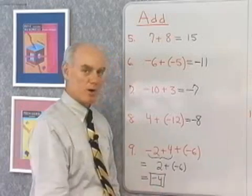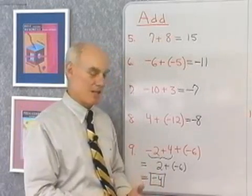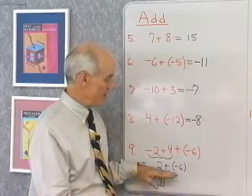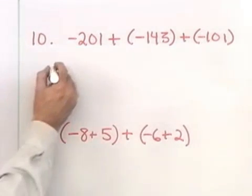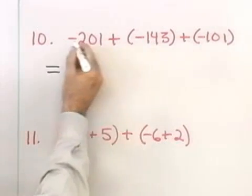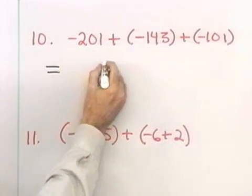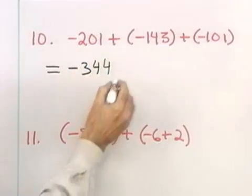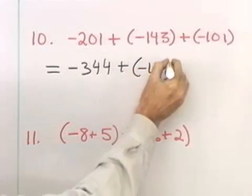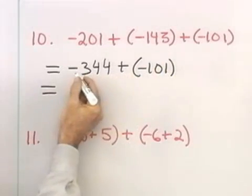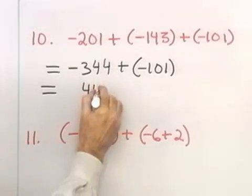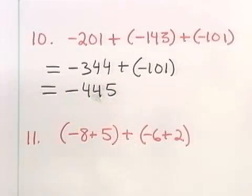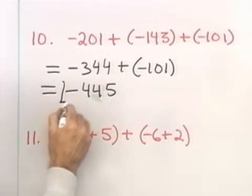When you get problems that require more than one step, remember to imitate the format — each line you write down should be a complete line. Next problem: negative 201 plus negative 143 plus negative 101. I add negative 201 and negative 143 first — same sign, so I add absolute values and get 443, and the common sign is negative, giving negative 443. Then I add negative 443 and negative 101 — same sign again — and get negative 445.